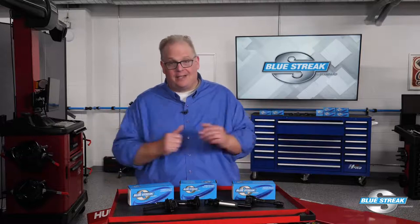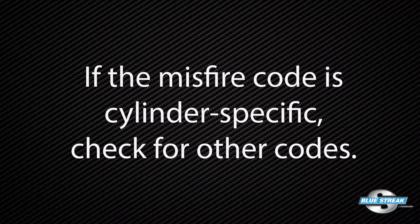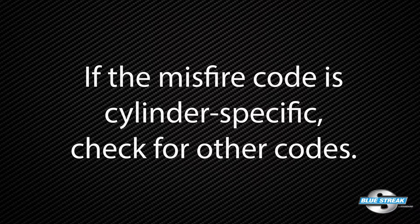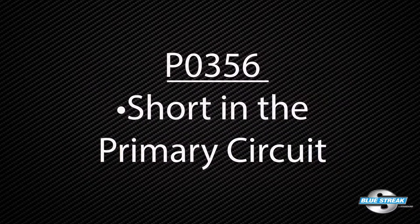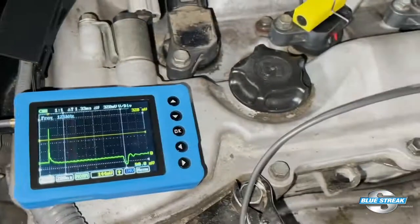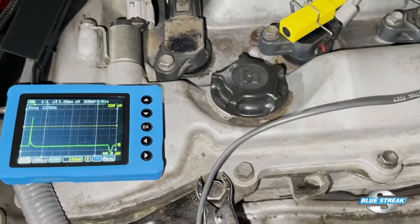How can Swaptronics damage be avoided? The proper answer is proper diagnostics. If the misfire code is cylinder specific, check for other codes. Often there will be codes for a coil circuit, like P0356 for a short in the primary circuit. If there are no codes, you can test the coil with either a scope or a meter.